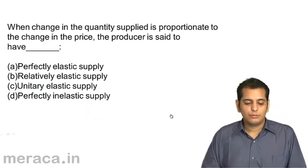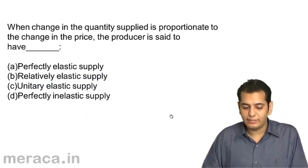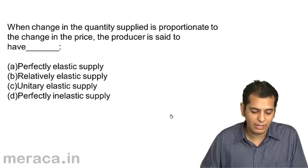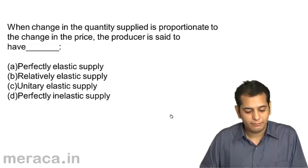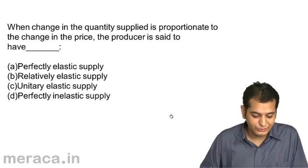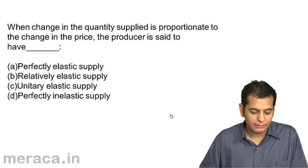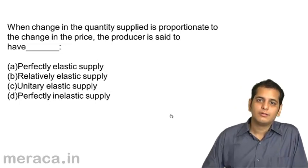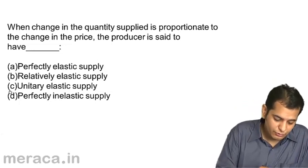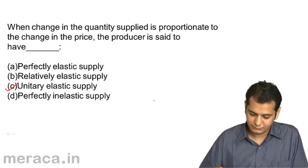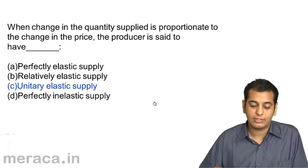Next question: when the change in quantity supplied is proportionate to a change in price, the producer is said to have — A: perfectly elastic supply, B: relatively elastic supply, C: unitary elastic supply, D: perfectly inelastic supply. The answer is C — unitary elastic supply.